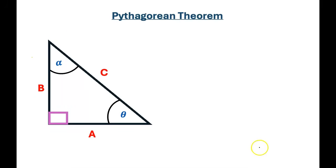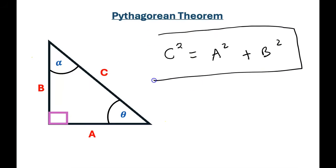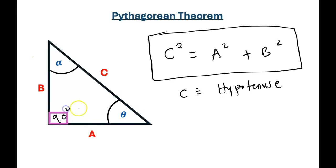Now let's look at the Pythagorean theorem. This is a fundamental principle in geometry that relates the three sides of a right triangle. C squared — that's the square of the hypotenuse — is equal to the sum of the squares of the legs. So C squared equals A squared plus B squared. That is the Pythagorean theorem. We know C to be the hypotenuse because it is the only side opposite to the 90-degree angle, which is the reason we call it a right triangle.